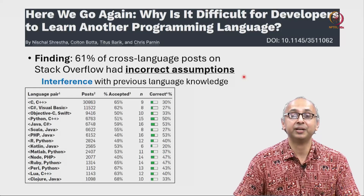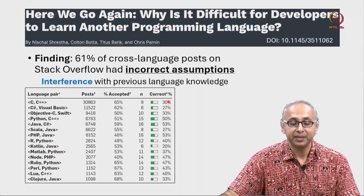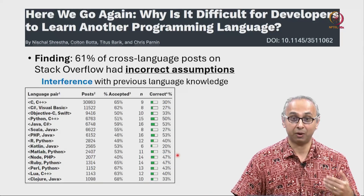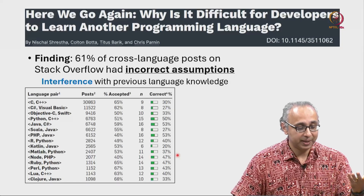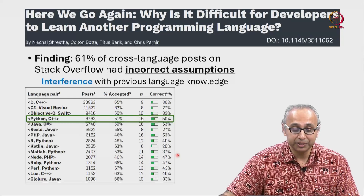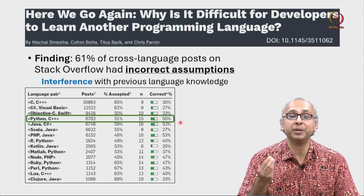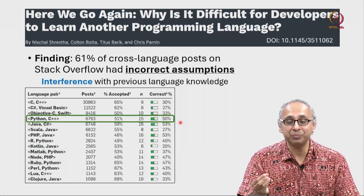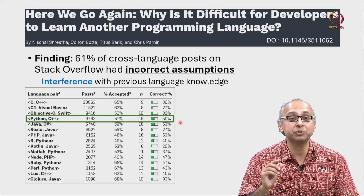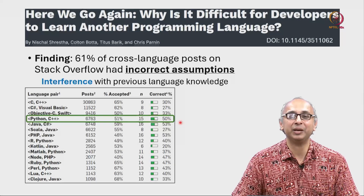In the paper there is a very nice table, and you can see that depending on which language pair people are going between, the correctness of their assumptions varies substantially. I am going to take you from Python to C — that particular pair is not on this list. But the closest pair is Python to C++, and notice that in about half those posts on Stack Overflow, the question being asked had an incorrect assumption relative to the target language that the developer was trying to learn.